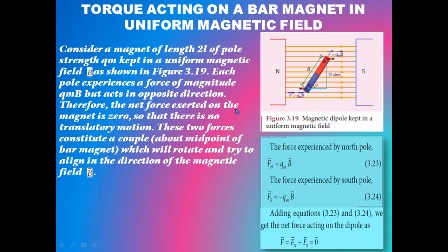So there is no translatory motion. These two forces constitute a couple about the midpoint of the bar magnet, which will rotate and try to align in the direction of the magnetic field B vector.